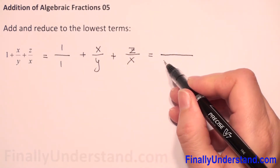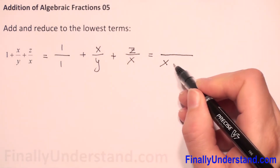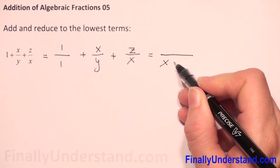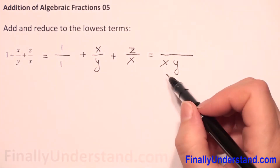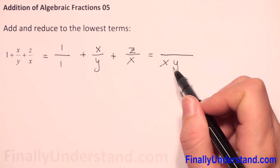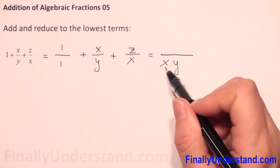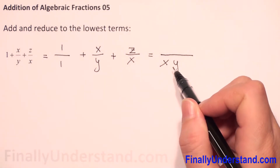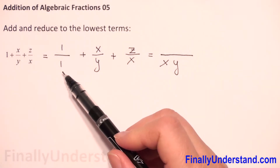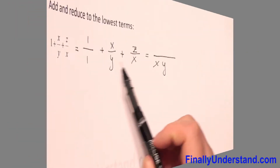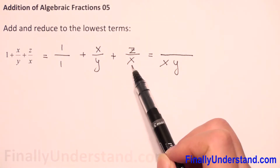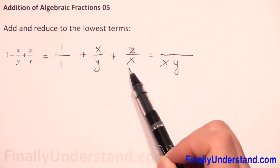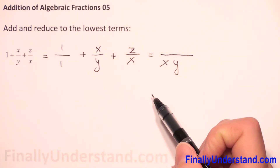I will put x first and then y — we always put variables in alphabetical order. The least common denominator for 1, y, and x will be xy, because xy is divisible by 1, divisible by y, and divisible by x. So xy is the least common denominator.